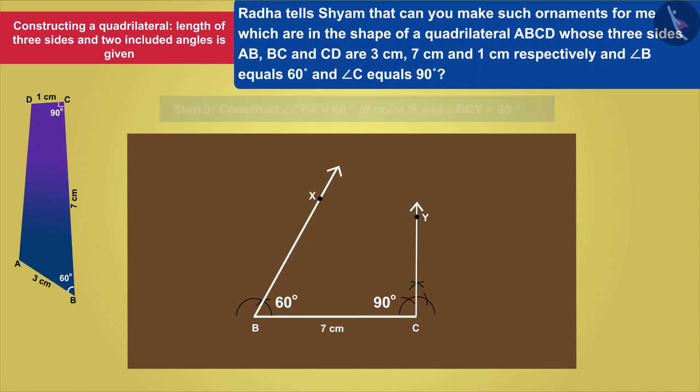According to the condition given by Radha, the adjacent sides of side BC are BA equals 3 cm and CD equals 1 cm.